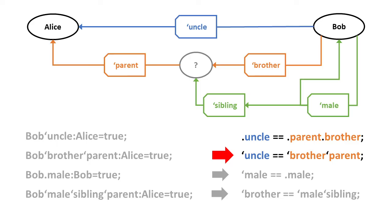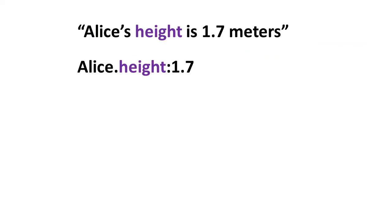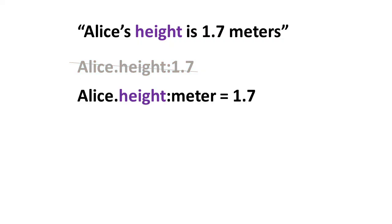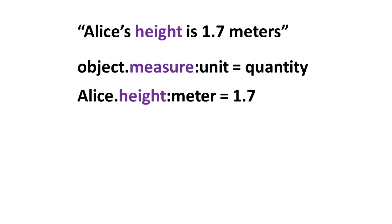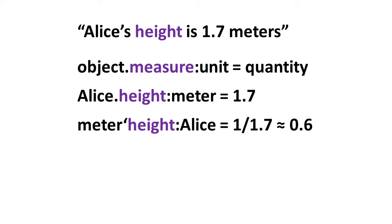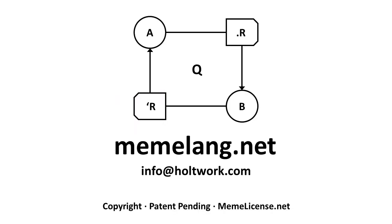We've now covered true/false relations in memetics, but what about numeric relations? Say we want to encode that Alice's height is 1.7 meters. We'll write Alice.height:meter = 1.7. B becomes a unit and Q becomes a numeric quantity, or more generally: object.measure:unit = quantity. Whenever Q is a number, B must be a unit. We can also invert this numeric relation where the quantity is inverted to 1 over itself — so whereas 1 Alice measures 1.7 meters, 1 meter measures 0.6 Alices. Memetic notation allows computers to efficiently make logical deductions from a small amount of data and a small set of rules.